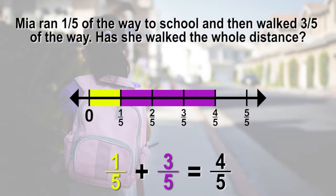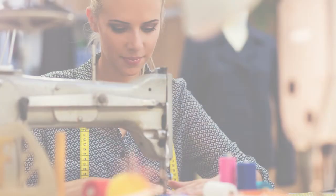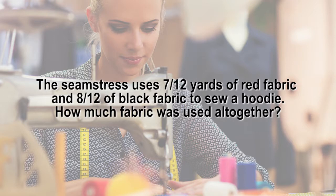Let's also do this last problem with a number line. The seamstress uses 7 twelfths of red fabric and 8 twelfths of black fabric to sew a hoodie. How much fabric was used altogether?